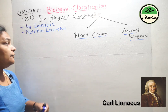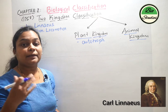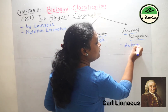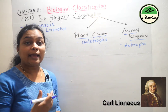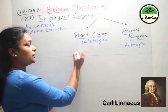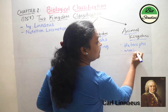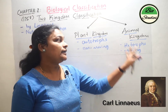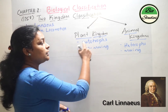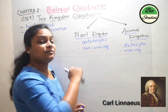All the autotrophs — organisms which can prepare their own food — were grouped under the plant kingdom. All the heterotrophs, which cannot prepare their own food and are dependent on other organisms for food, they were grouped under the animal kingdom. Regarding the second character, locomotion: all the non-moving organisms were grouped under the plant kingdom, and all the organisms that can move from one place to another were grouped under the animal kingdom.